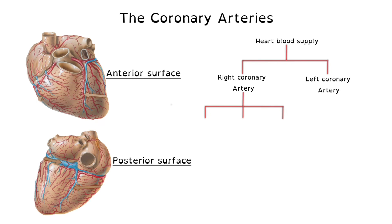The branches of the right coronary artery include the artery to the SA node as the first branch, which travels upward to supply the SA node. The right coronary artery continues and gives off the right marginal artery. On the posterior surface, assuming the patient is right heart dominant, the posterior descending artery will be coming from the right coronary artery.